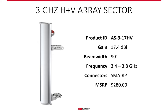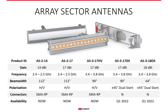The horizontally and vertically polarized 3 GHz array sector antenna has a 90-degree beam width, standard RPSMA interface, and an MSRP of $280 USD, and it is available already with our distributors. To sum it up, we are adding two array sectors in the 2 GHz band with two gain options, one 3 GHz array sector with RPSMA interface and horizontal-vertical polarization, and two 3 GHz array sectors with dual slant polarization and innovative N female connectorized interface with IP55 weatherproofing.